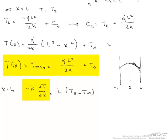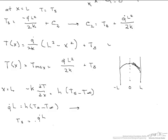When we take our derivative with respect to x, put in L and simplify, we find that minus k dT dx equals q dot times L. And this is going to equal h times Ts minus T infinity. Therefore, if we want to find the surface temperature, it is q dot times L divided by h plus T infinity.